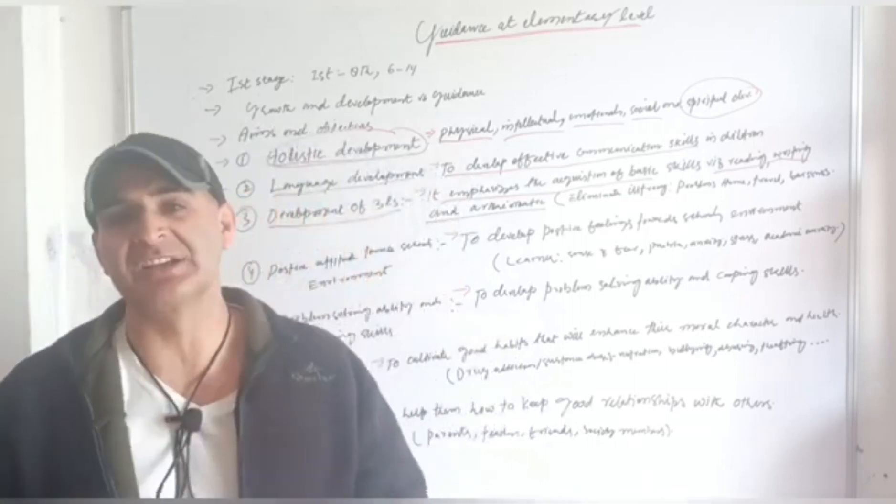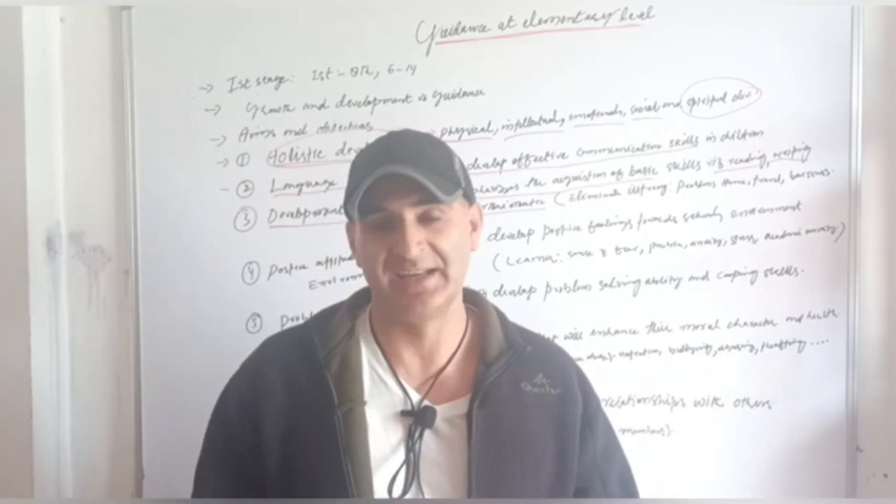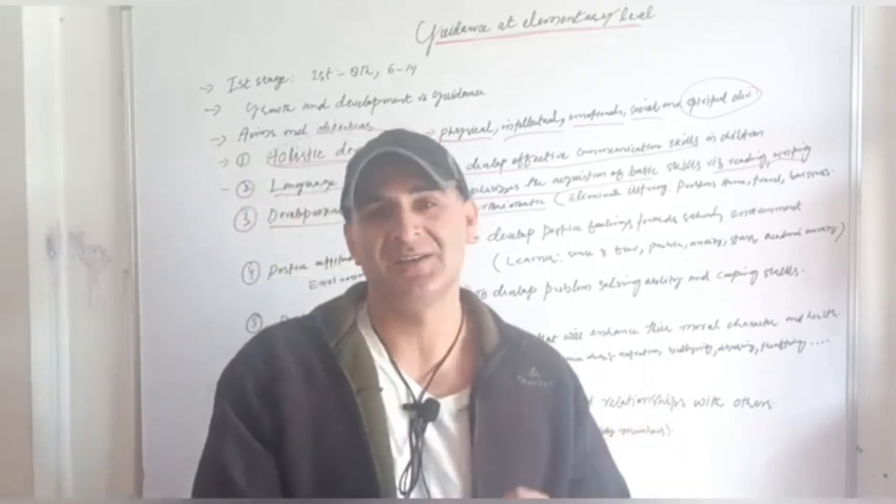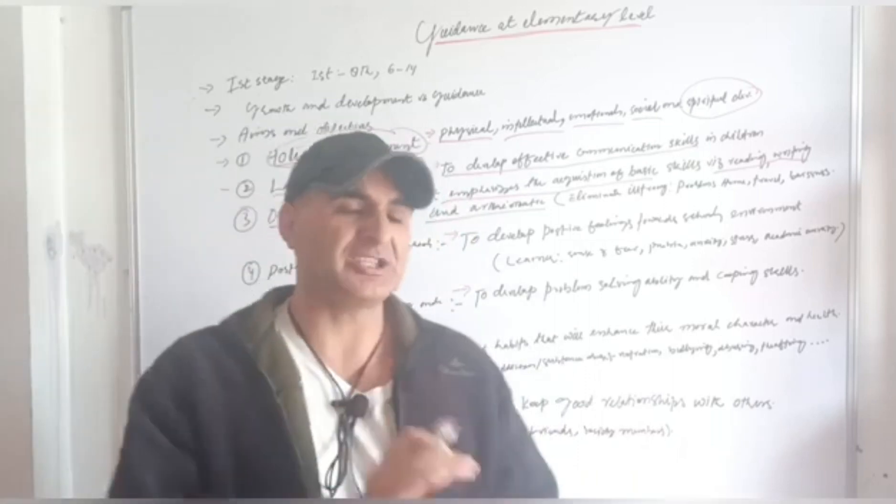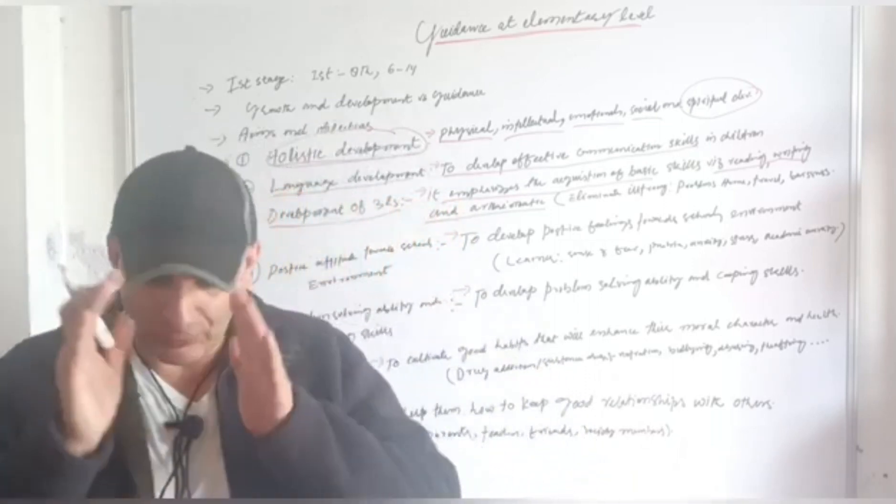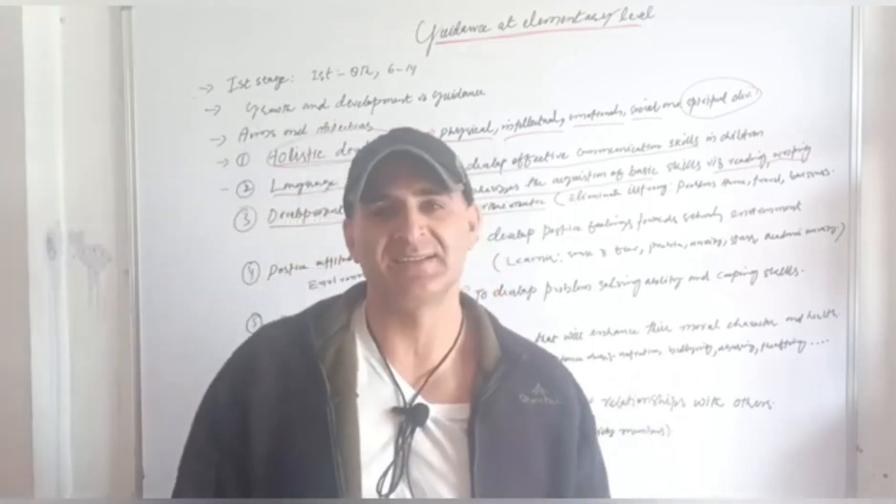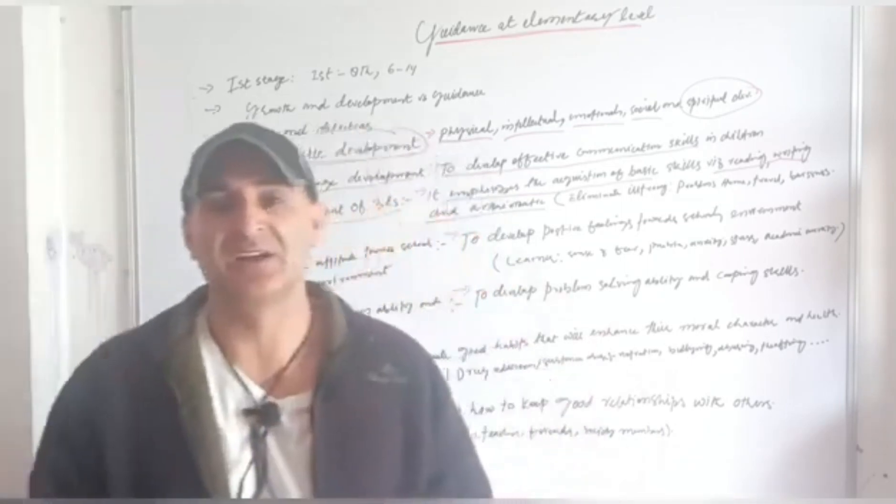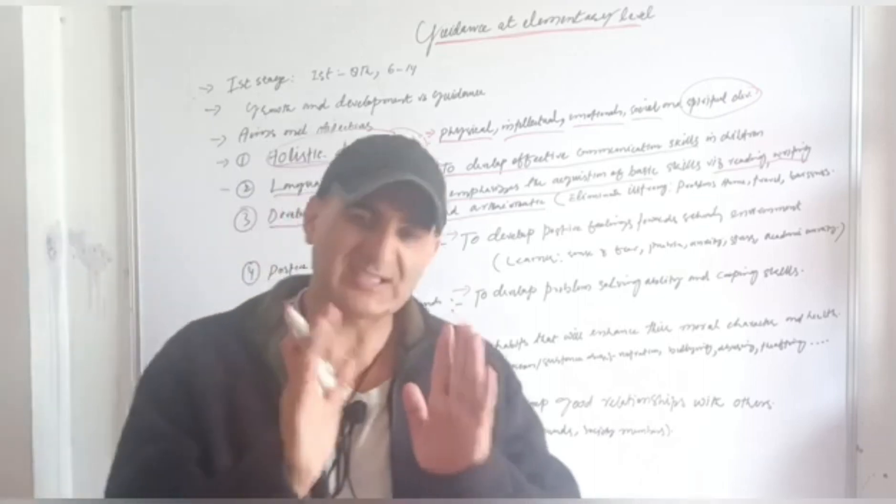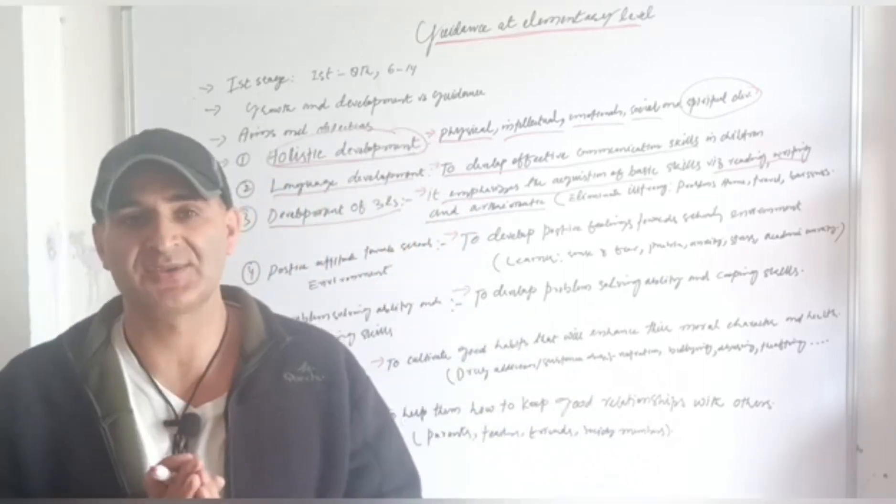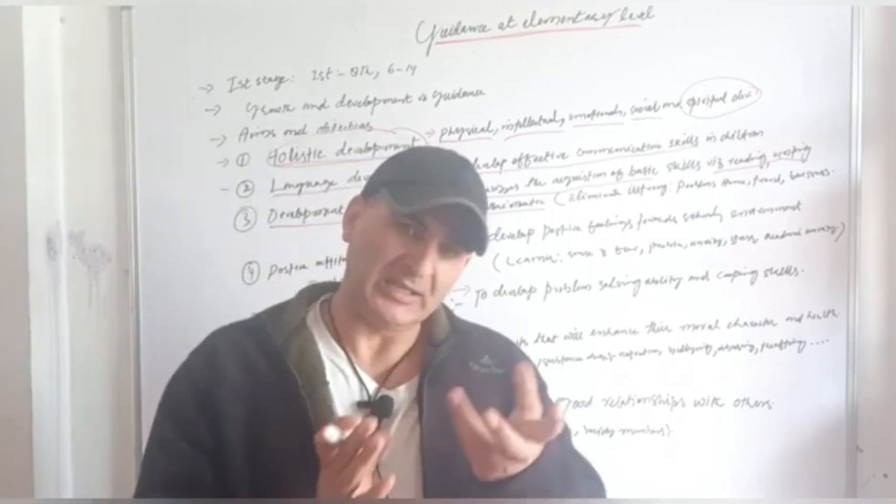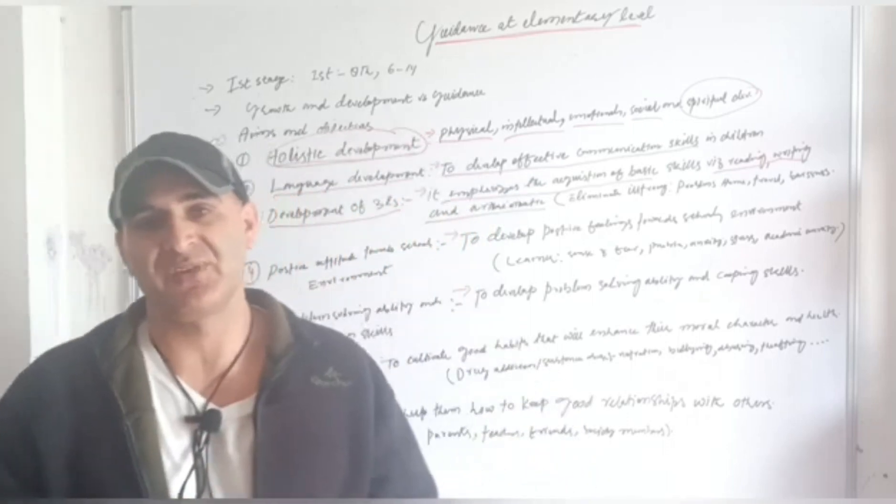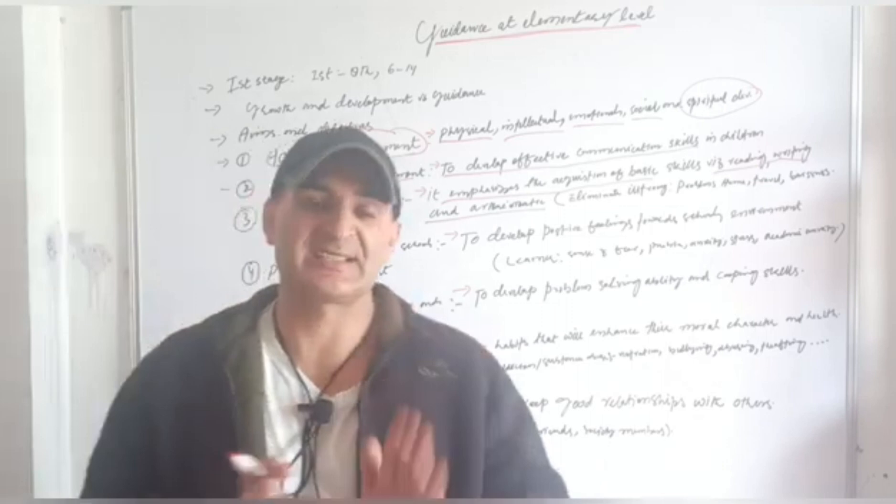That is why our national objective is that we have to eradicate, eliminate complete illiteracy at elementary level, so that every individual or citizen of India is able to read and write. That is why Article 21A highlighted that education is the fundamental and deep-seated right of every individual without any discrimination.